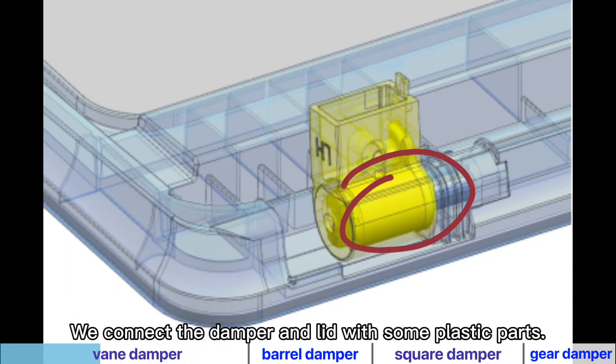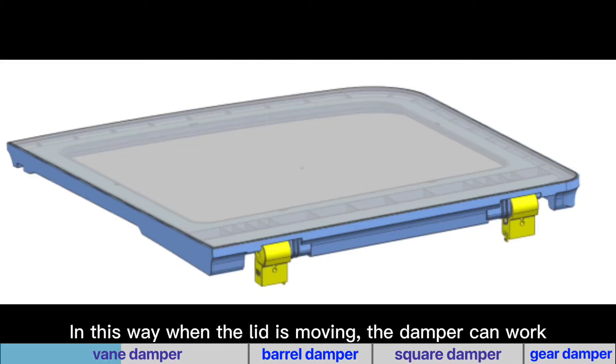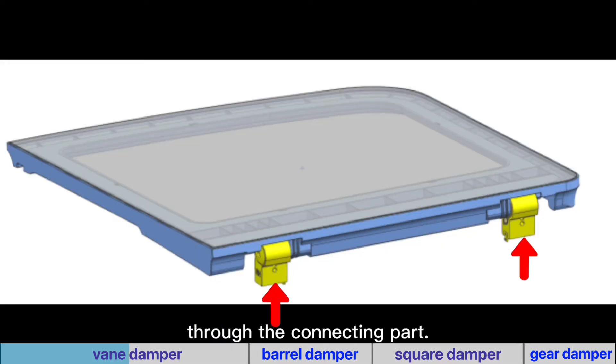We can connect the damper and cover lid with some plastic parts. In this way, when the lid is moving, the damper can work through the connecting part.